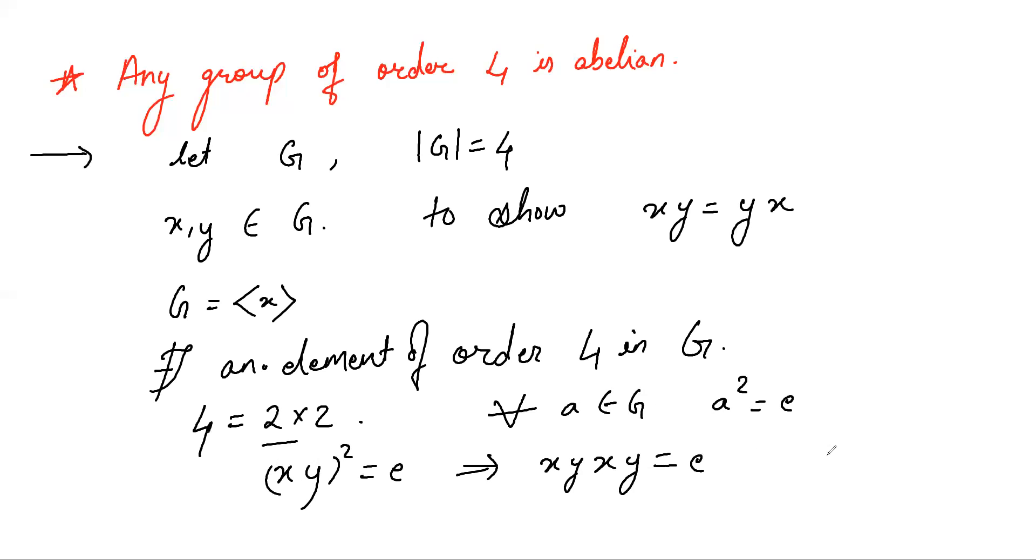Now multiply xy on the right by yx. So this gives us xyxy·yx equals yx.